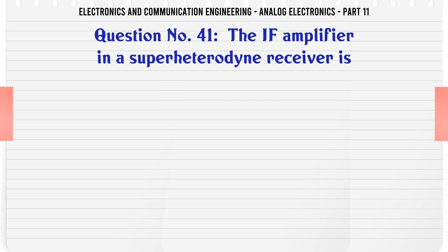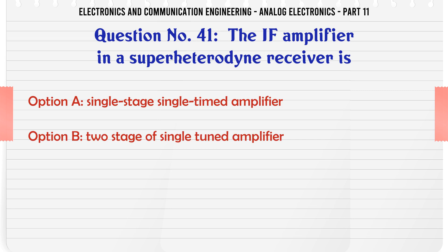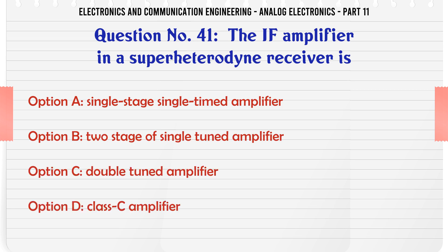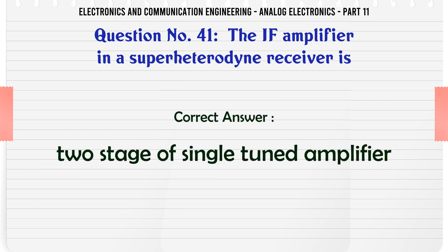The IF amplifier in a superheterodyne receiver is. A. Single stage single tuned amplifier. B. Two stage single tuned amplifier. C. Double tuned amplifier. D. Class C amplifier. The correct answer is: Two stage single tuned amplifier.